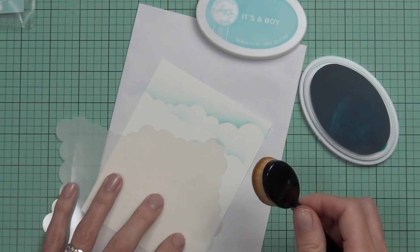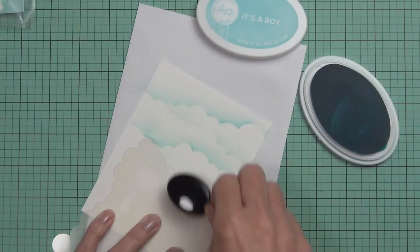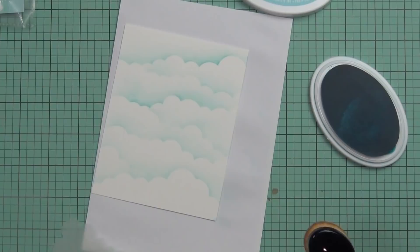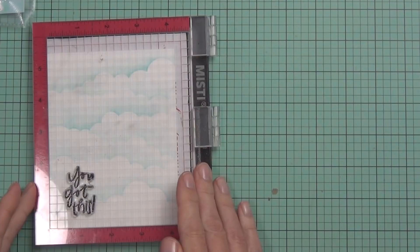I've made a really fast and easy panel here, cut the same size as the front of my card. I'm using my blender tool and a cloud stencil with some It's a Boy ink from Catherine Paula, just working my way down the panel to make a really quick and easy cloud background. I'm adding my sentiment now before I pop up the whole panel. It's from the Crafty Ladies Essay stamp set.